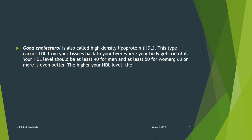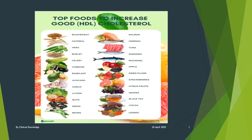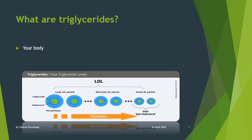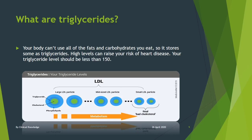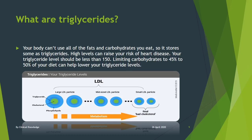Your body can't use all of the fats and carbohydrates you eat, so it stores some as triglycerides. High levels can raise your risk of heart disease. Your triglyceride level should be less than 150. Limiting carbohydrates to 45 to 50 percent of your diet can help lower your triglyceride levels.